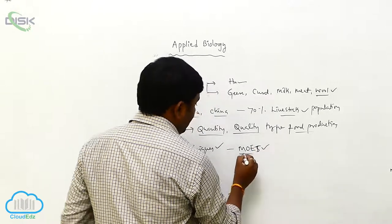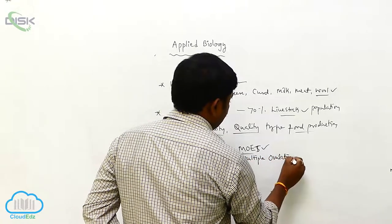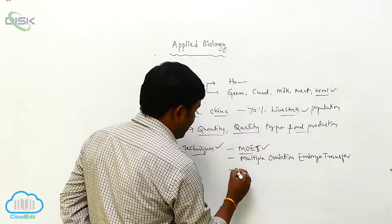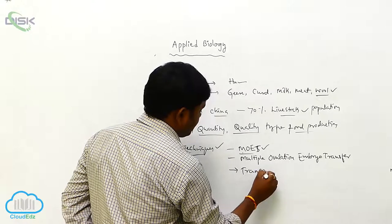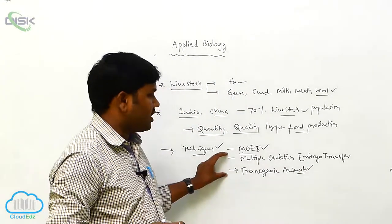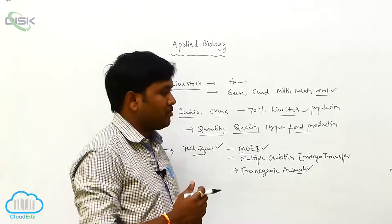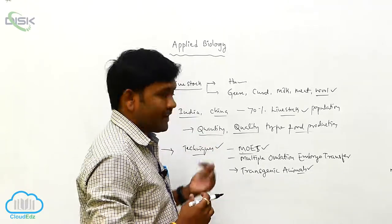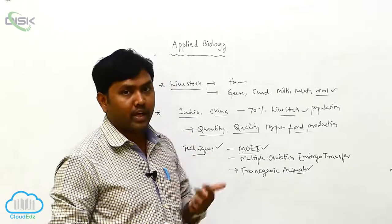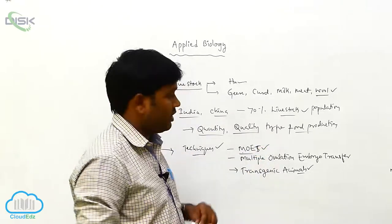MOET — Multiple Ovulation Embryo Transfer — is one method, and another one is transgenic animals. These methods are being provided for the livestock so they produce desirable milk products. These are new techniques which help to produce more milk or more milk products.